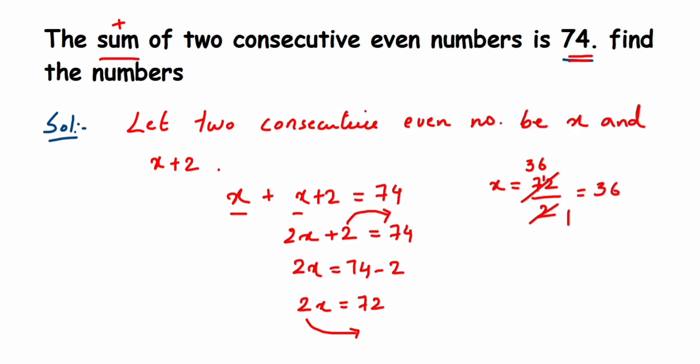We are going to conclude the answer here. Therefore x is equal to 36, and then x plus 2 will be 36 plus 2, which is 38. So therefore 36 and 38 are two consecutive numbers.